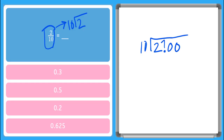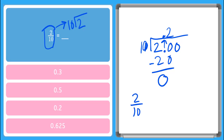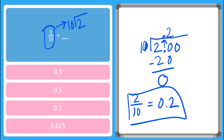And I bring my decimal point right up above. And now I can say 10 goes into 20 how many times? Well, that's 2 times, right? And 2 times 10 is 20, so when I subtract these, I get a 0 and now I'm complete. So I've converted my fraction 2 tenths into a decimal, which is 0.2.